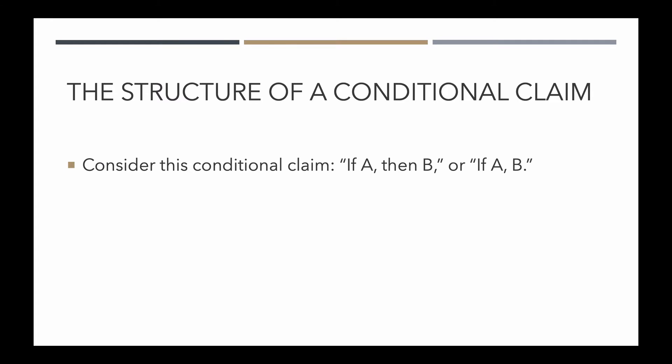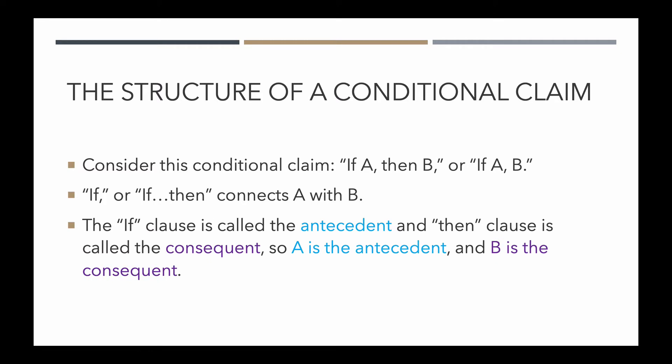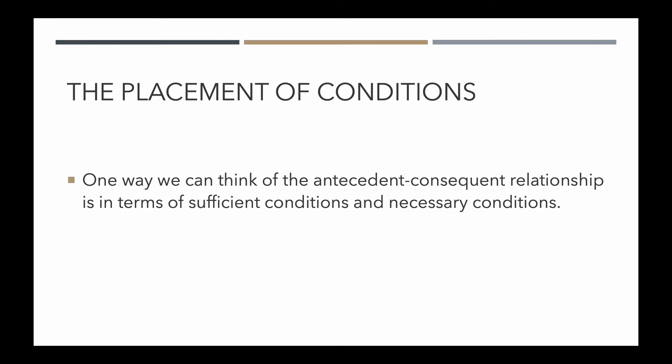We start with the structure of a conditional claim. We have: if A, then B — or simply if A, B. The 'if...then' is the connective that connects A with B. The if-clause is called the antecedent and the then-clause is called the consequent. So A is the antecedent and B is the consequent. When we say 'if A, B,' we're asserting a relationship between A and B by way of the conditional structure. One way to think about this relationship is in terms of a sufficient condition and a necessary condition.